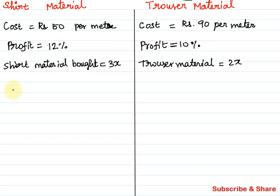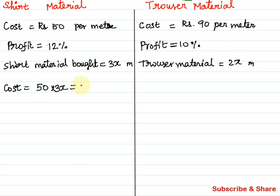First, let's find the cost of shirt material. Shirt material is 3x meters, and 1 meter costs 50 rupees. So the total cost of shirt material is 50 into 3x. 50 into 3 is 150, so the total cost of shirt material is 150x rupees.